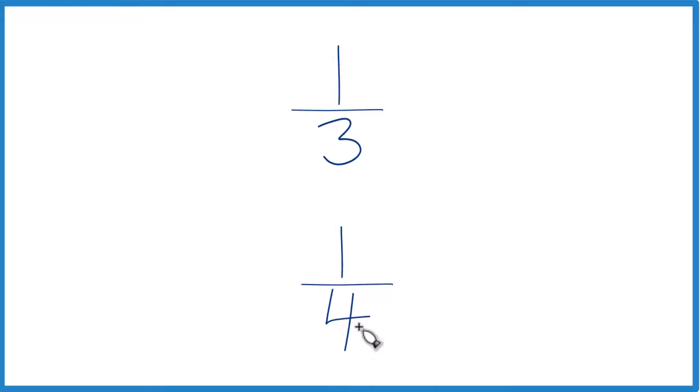The other way to do it is to find a common denominator, something that both three and four go into. Because if we have a common denominator, we just compare the numerators to figure out whether one-third is larger or less than one-fourth. Let's do that.